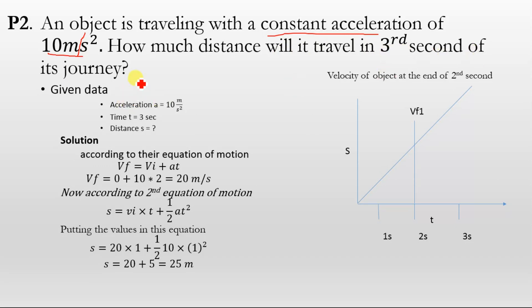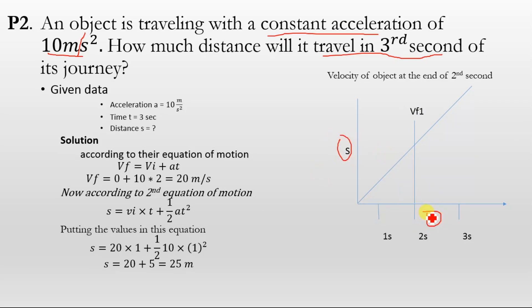In this problem, we will calculate the distance travelled in the third second of its journey. For illustration, we will explain this graph. This is the time axis and this is the distance axis, so this is the time-distance graph. This is the first second, this is the second second of its motion, and this is the third second of its motion. We will calculate the distance travelled during this third second of its journey.